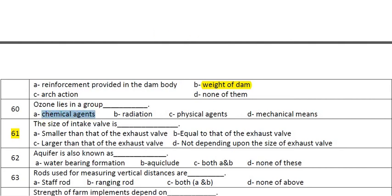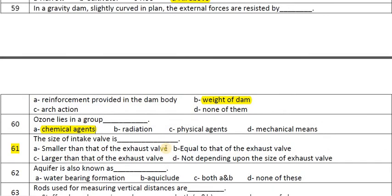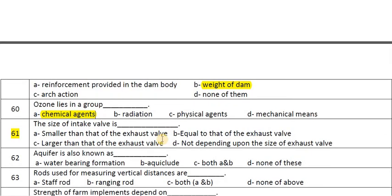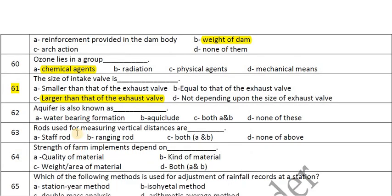The size of the intake valve is larger than that of the exhaust valve to get more air. An aquifer is also known as a water-bearing formation. Rods used to measure vertical distances are called staff rods.